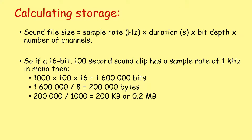Let's have a refresher on calculating storage for sound files. Sound file size is the sample rate in hertz multiplied by the duration in seconds, multiplied by the bit depth, multiplied by the number of channels. Number of channels means is it mono — one channel — or stereo — two channels. So if a 16-bit, 100-second sound clip has a sample rate of 1 kilohertz in mono, we calculate: 1,000 × 100 × 16 = 1,600,000 bits. Divide by 8 to get 200,000 bytes, then divide by 1,000 to get 200 kilobytes, or divide again to get 0.2 megabytes.